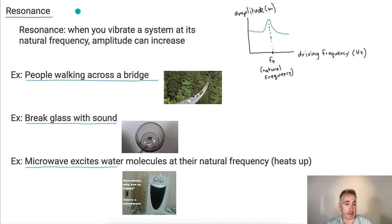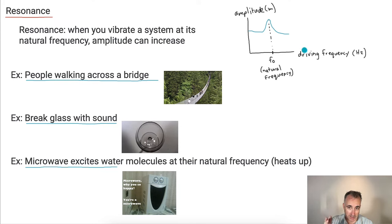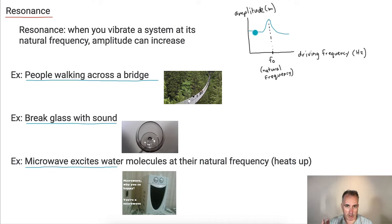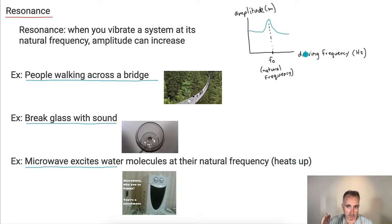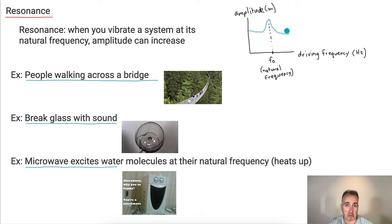Let's go a little bit deeper into resonance. What happens with resonance is if you have a driving frequency — something where you're actually hitting it or forcing it — and if we look at the amplitude versus driving frequency, when you hit it at a driving frequency that equals its natural frequency, you can cause the amplitude to go up. If you're artificially vibrating it at exactly its natural frequency, the amplitude of the wave will increase. This can be good or bad depending on what you want.